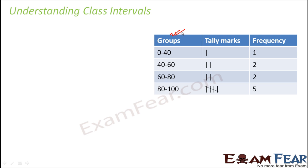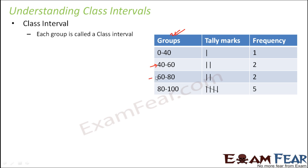Now when we talk about this grouped frequency distribution table, there are certain terminologies which we very commonly use. The first terminology is a class interval. Each group is called a class interval. So 40 to 60 is a class interval, 60 to 80 is a class interval, 80 to 100 is a class interval. We do not call it a group — terminology-wise we give it the term class interval.